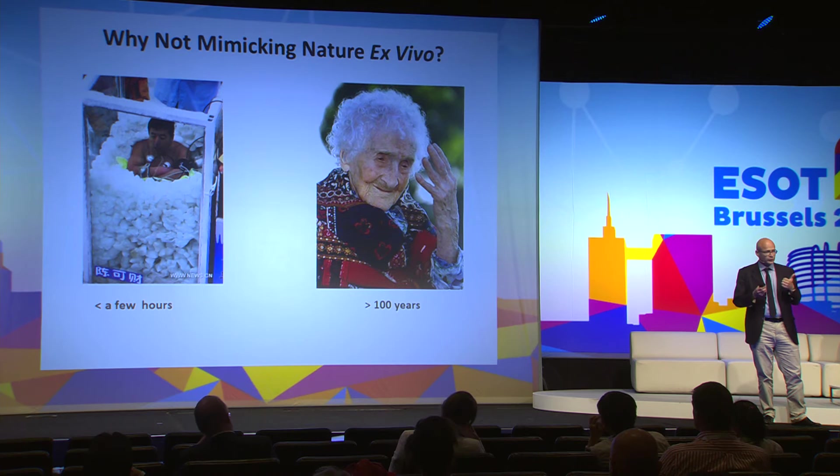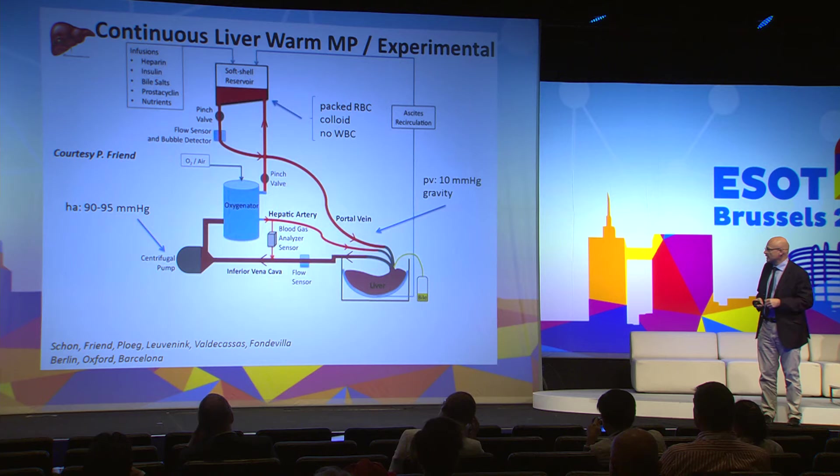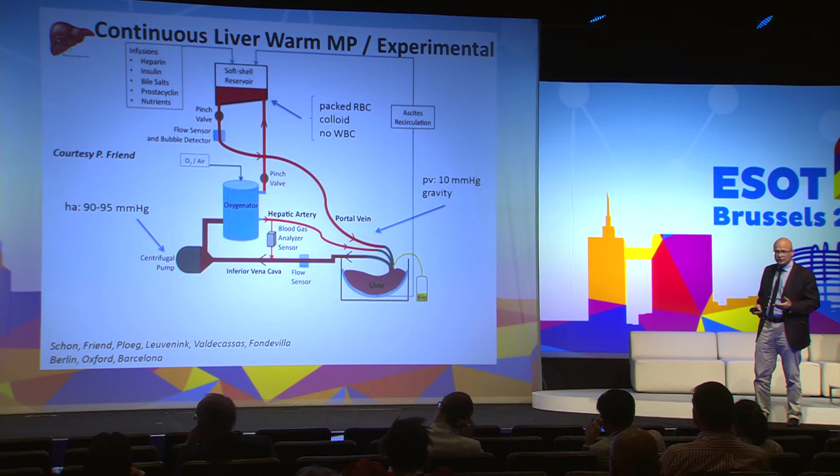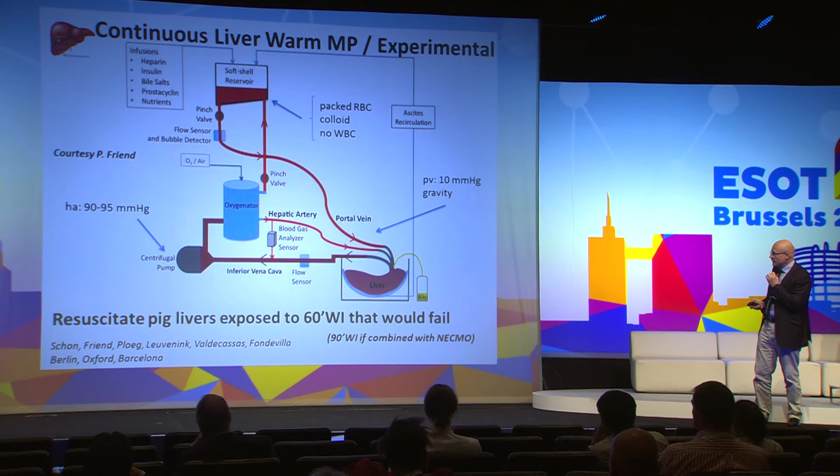So why not try to mimic nature? We know that in the womb, with oxygen, we permanently repair our organs and can preserve them for a long period of time. That's the idea of ex vivo warm perfusion. Here, the system developed by Peter Friend for the liver maintains a liver alive and producing bile outside the body for 20 hours or more. Very importantly, livers exposed to 60 minutes of warm ischemia that would otherwise fail could work with this technique.